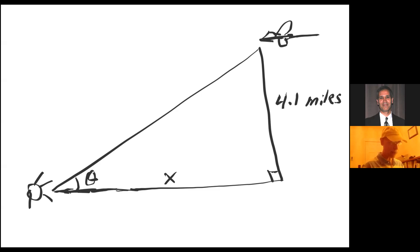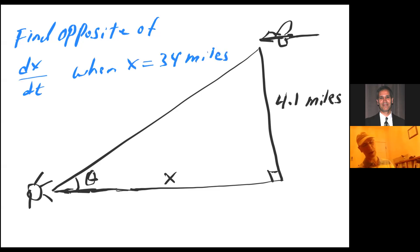Well, and we are told that what is, so, so find the opposite direction, instead of dx/dt, let me write that. Our job is to find opposite of dx/dt when X equals 34 miles. Okay, let me go to the next page.